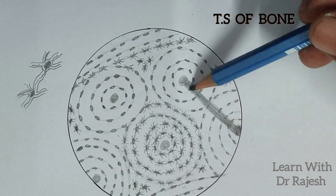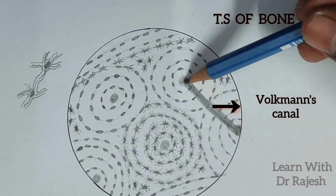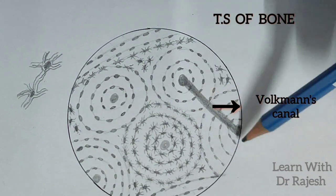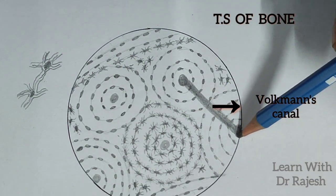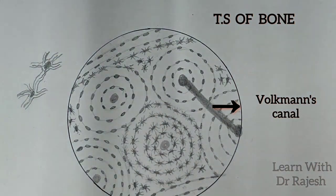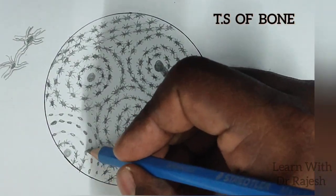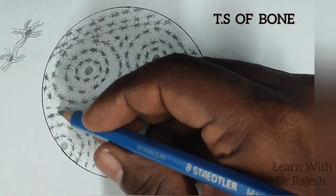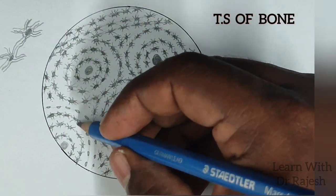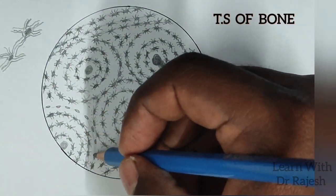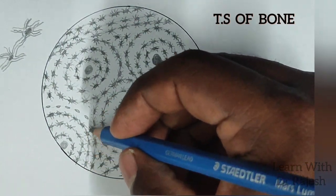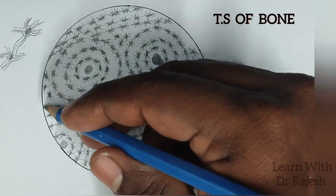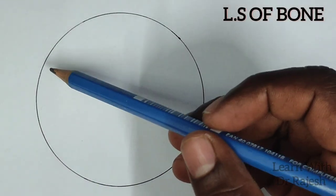What we are drawing now is a connecting channel between two Haversian canals. This connecting channel is called Volkmann's canal. These Haversian canals and Volkmann's canals help in the transportation of nutrients to the cells, with blood vessels travelling via these channels.